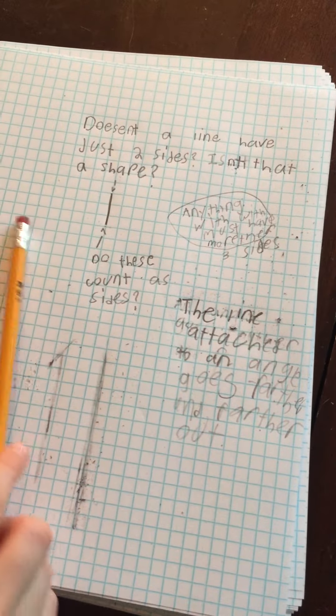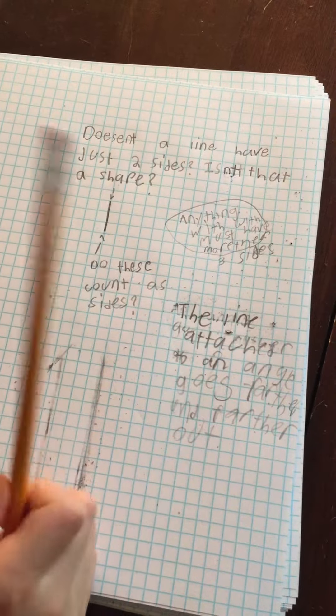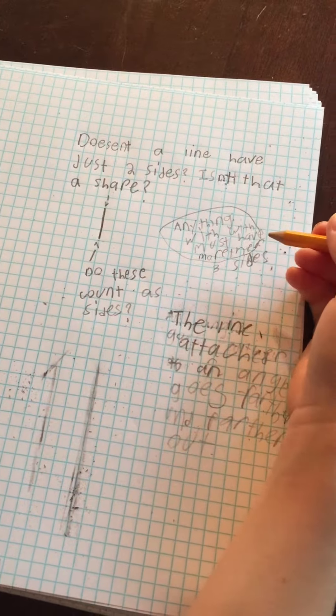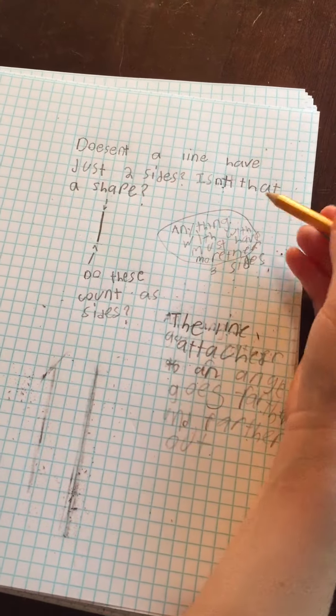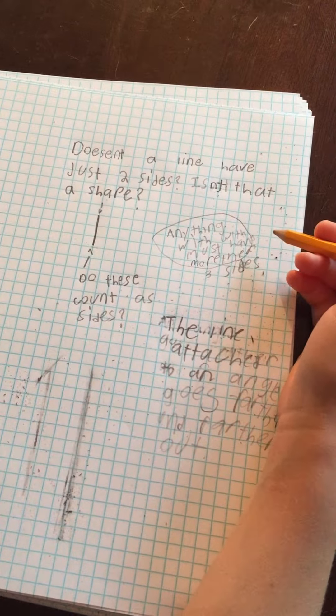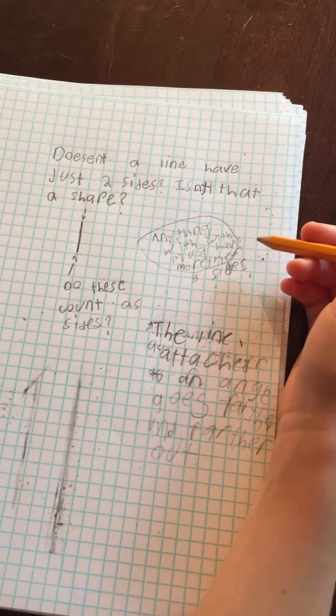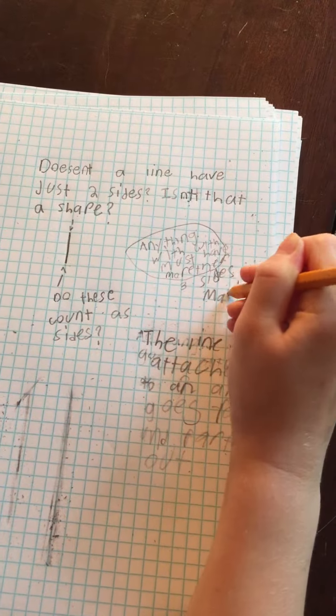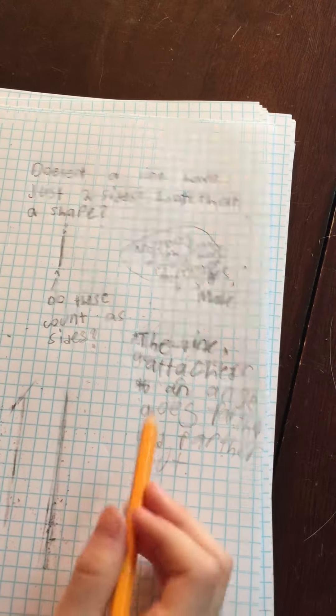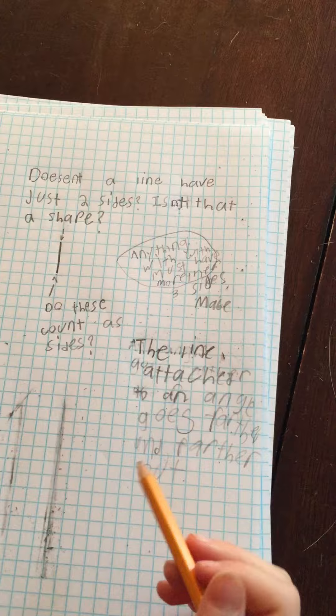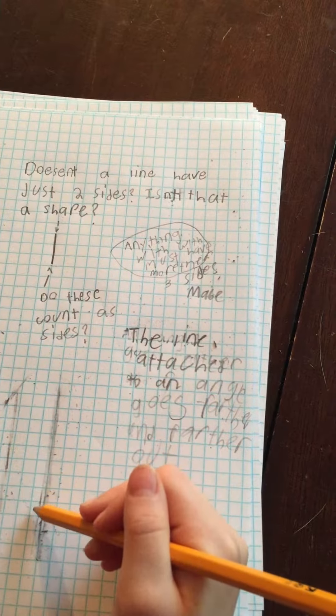Doesn't the line just have two sides? Isn't that a shape? Well, I figured anything with width must have more than three sides. Maybe the line... I realized that the line attached to an angle just...